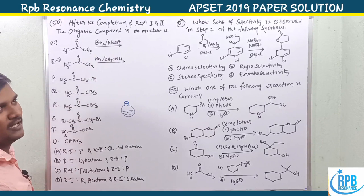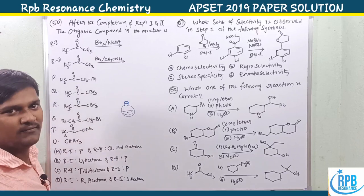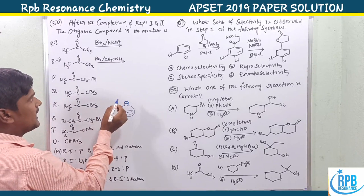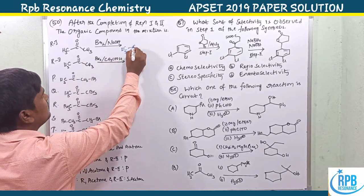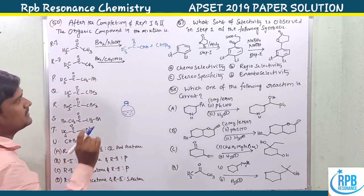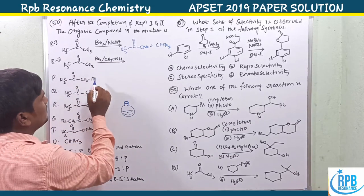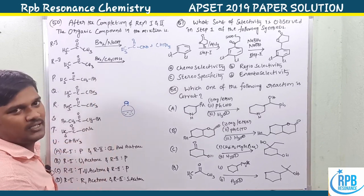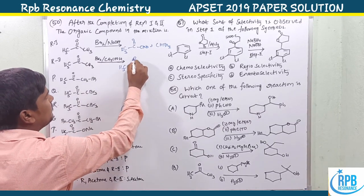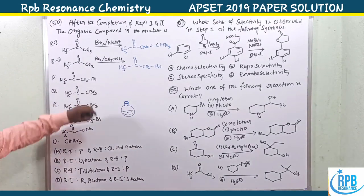For the first reaction: Br₂/NaOH is present — that is nothing but the haloform reaction. So R-CO-CH₃ with Br₂/NaOH gives RCOO⁻Na⁺ plus CHBr₃ (bromoform). That is the first reaction product. Second reaction: acetone with Br₂ in acetic acid medium — glacial acetic acid represents alpha halogenation, giving the mono-halogenated product.